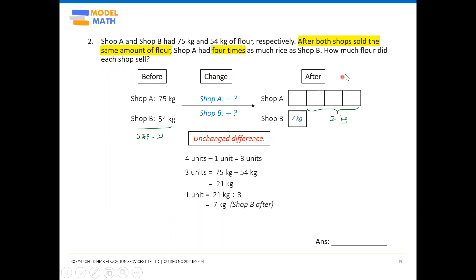Now, how much did each shop sell? It doesn't matter whether we use Shop A or Shop B, since both sold the same amount. It's simpler to use Shop B because we already have Shop B's before and after values. If using Shop A, we'd need to calculate 7 times 4 units, which is a bit more work, but both approaches give the same answer.